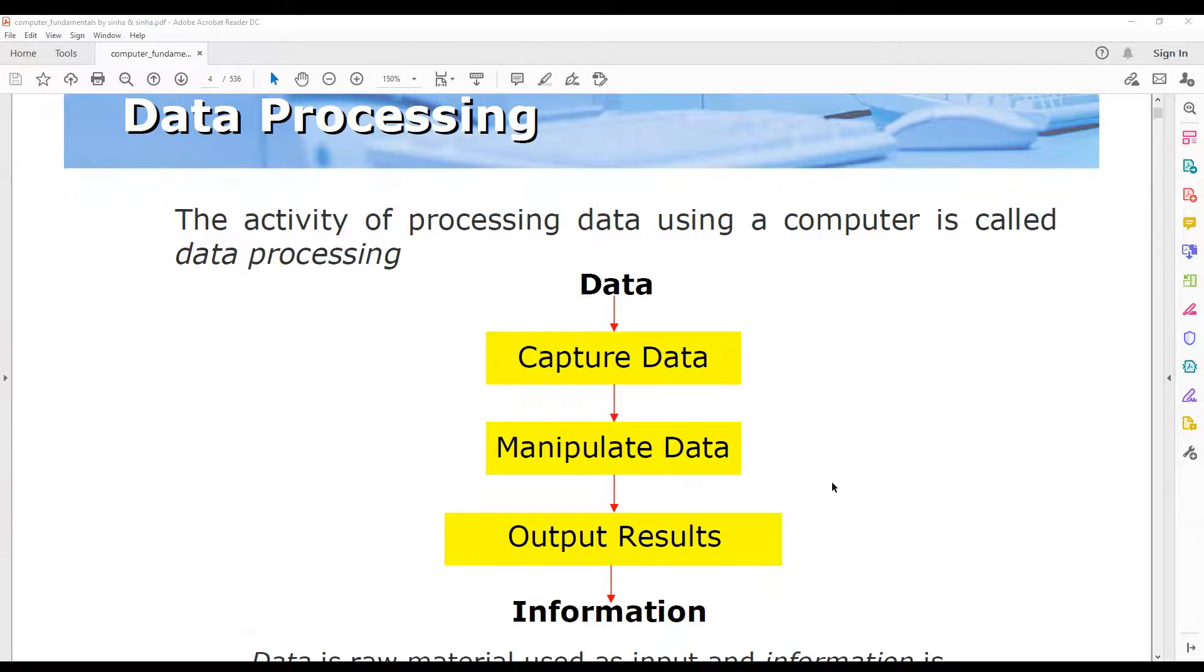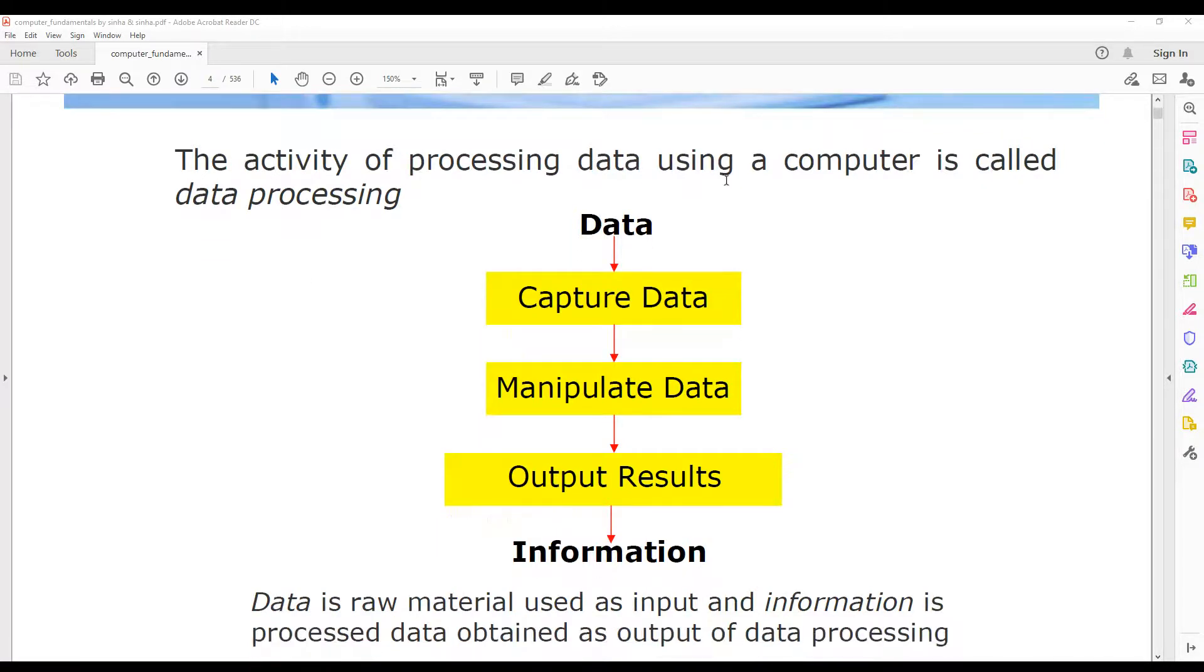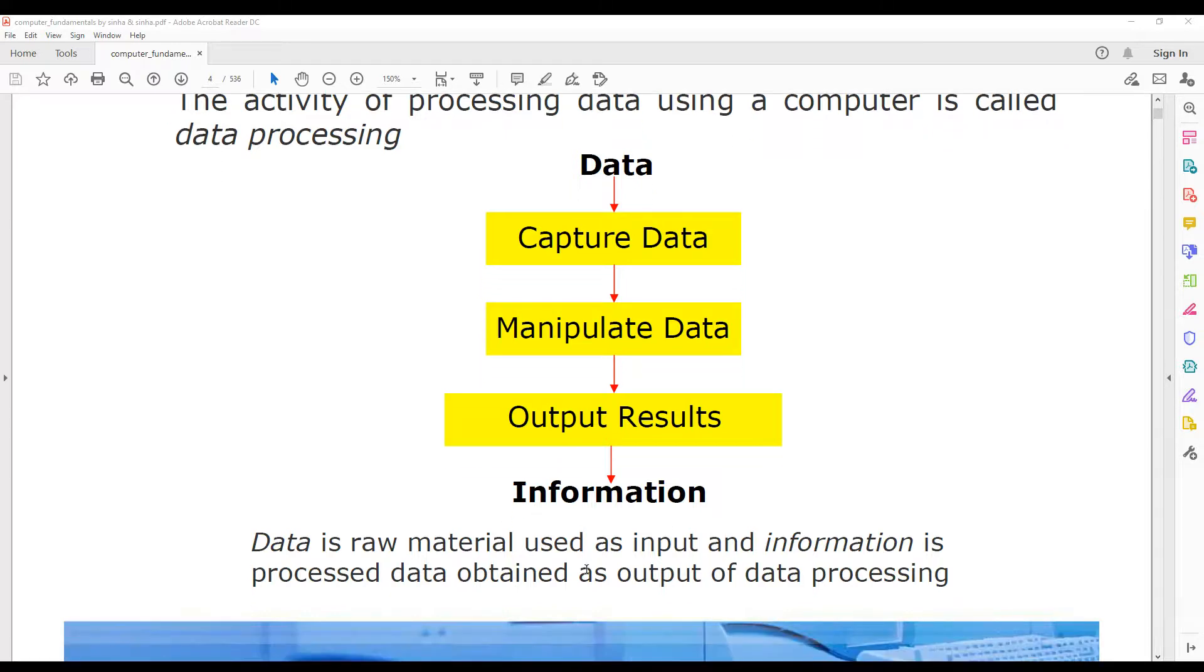So data processing. What is data processing? The activity of processing data using a computer is called data processing. Here a picture is given, you can see a flow chart type picture. First of all we give data as an input. Then what computer does? Computer captures that data then manipulates that data. Then after manipulation, that means after processing, we get the output result which is called information.